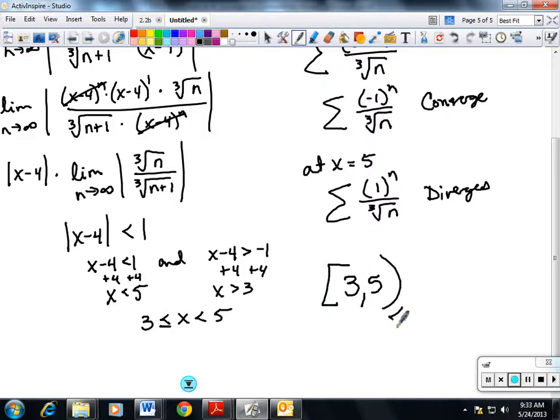And again, if it asks me about my radius, 3, 4, 5, the radius is from the center to the outside either way, so it's 1. So my radius of convergence is 1.